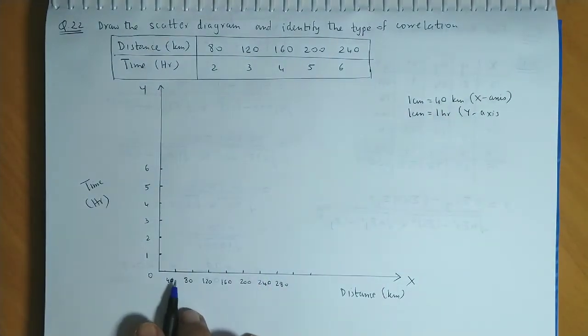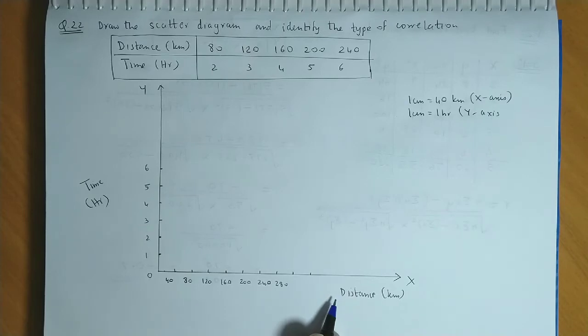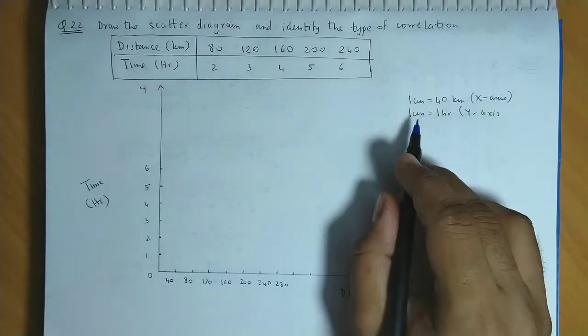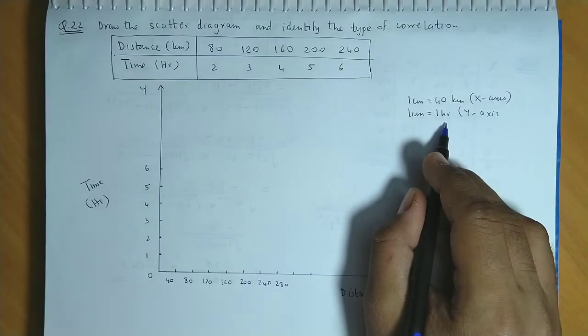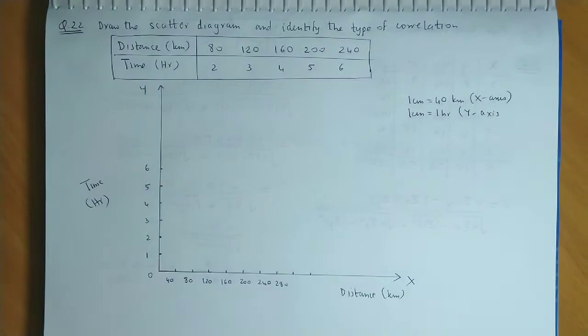So you have 0, 40, 80, 120, up to 280 marked on the x-axis. And on the y-axis, scale is 1 cm is equal to 1 hour. So you have 0, 1, 2, 3, up to 6 hours.